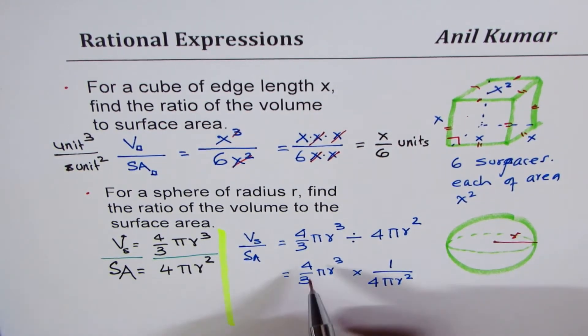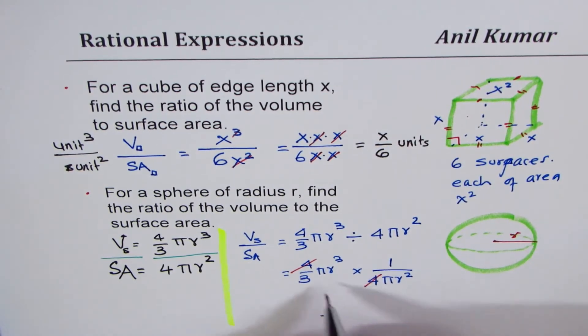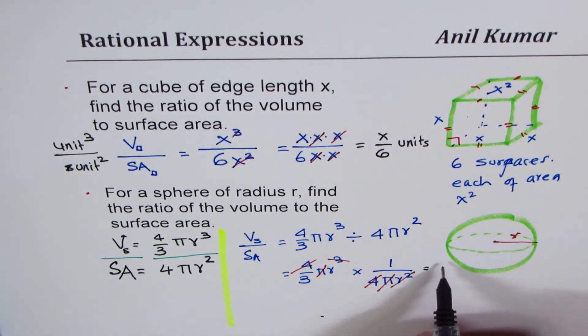That's the idea. So 4 gets cancelled with 4. Pi gets cancelled with pi. r square as I have shown you here with x's. Two of them gets cancelled. One remains. So what do you get? In the numerator, you get r and in the denominator, you get 3. So you get r over 3. One third of radius. This is what you get.